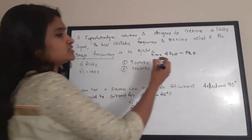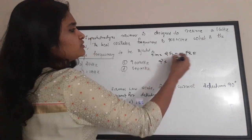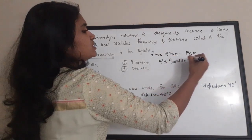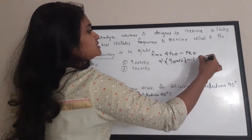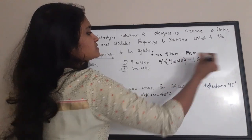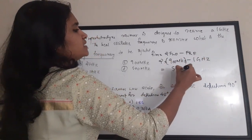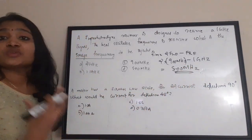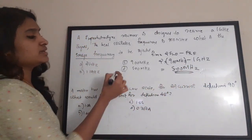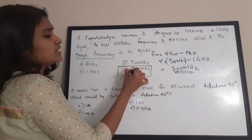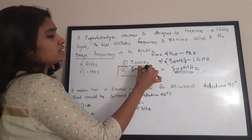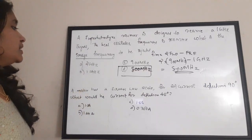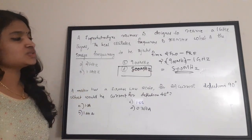Calculating: 2 × 900 MHz − 1 GHz = 1800 MHz − 1000 MHz = 800 MHz. The answer is 800 megahertz, which is option D.